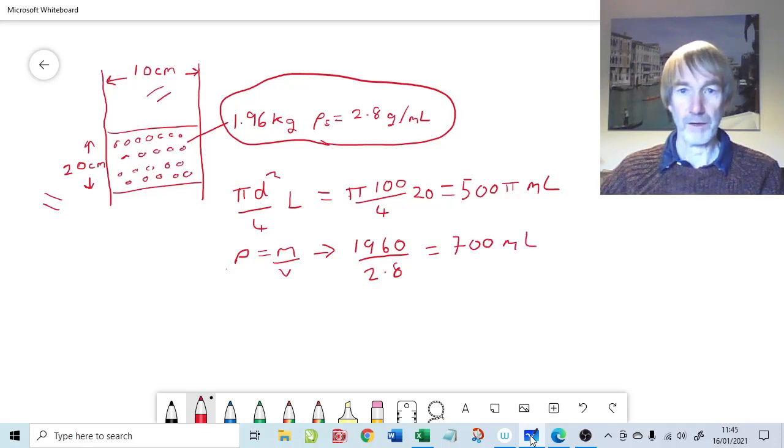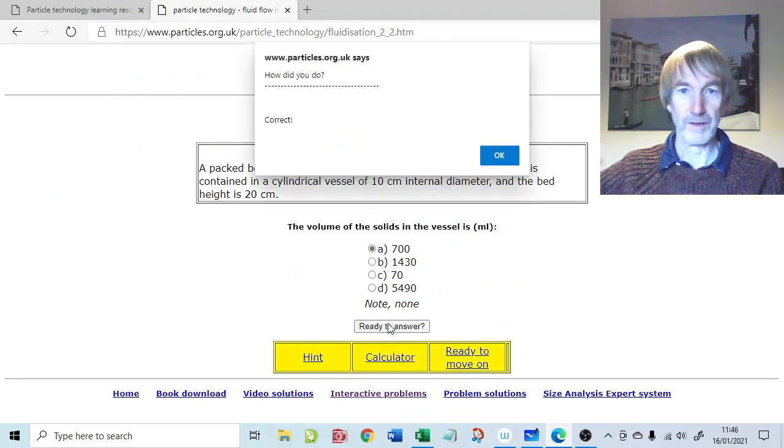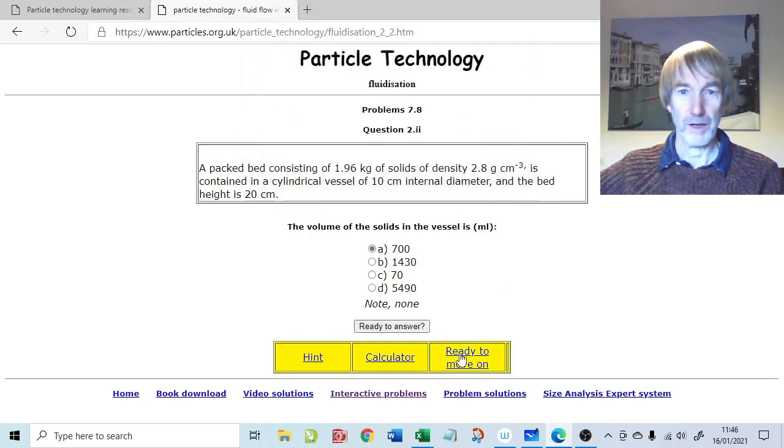Now I know the next thing is to calculate the voidage. So the solids concentration is going to be equal to 700 mils divided by, what was the original voidage? 1570. Better just quick check on that. Check that the answer is correct. It is. That's good news.